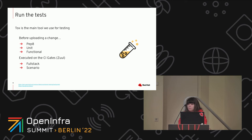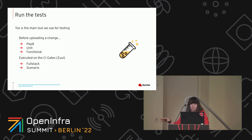Once you have your code ready, remember that you have to pass all the tests: the PEP8 test for code style, the unit tests, and the functional tests — those are the ones you should run yourself. The good thing is that because we use Tox, you can run tests only for the specific classes you're changing, so you don't have to go through the entire code base every time. Once you upload your change, the full stack and scenario tests will be executed on the CI gates.